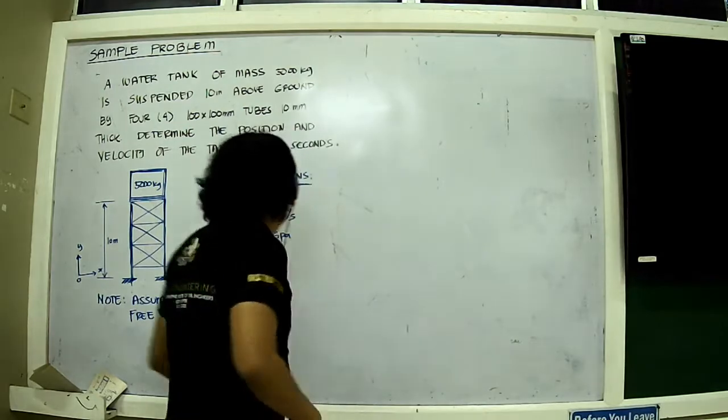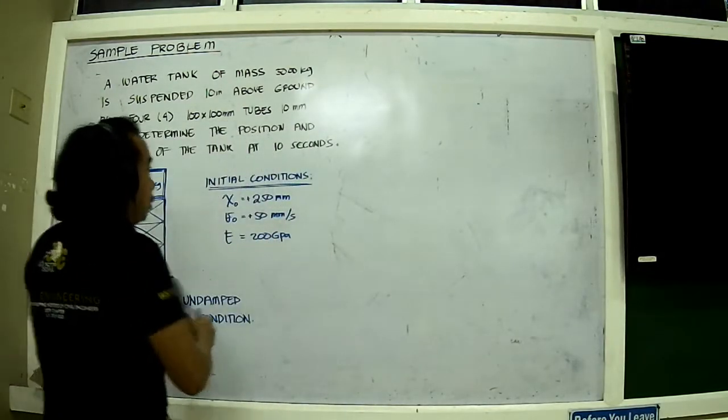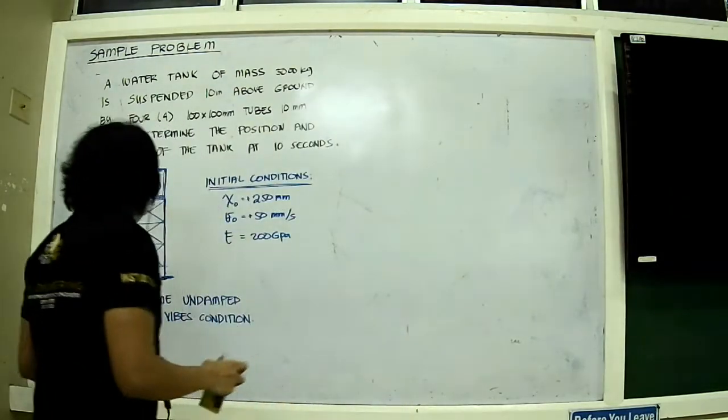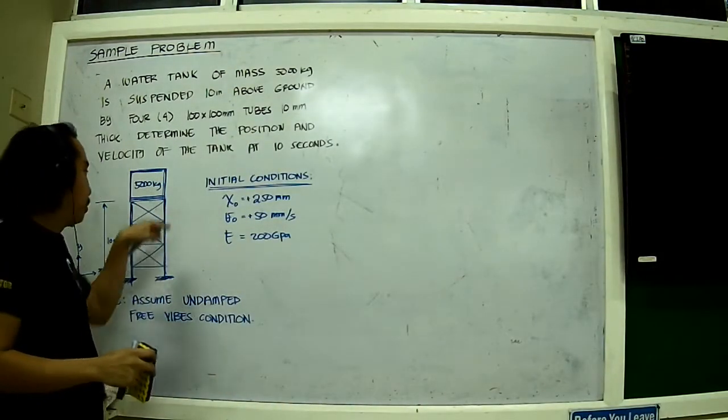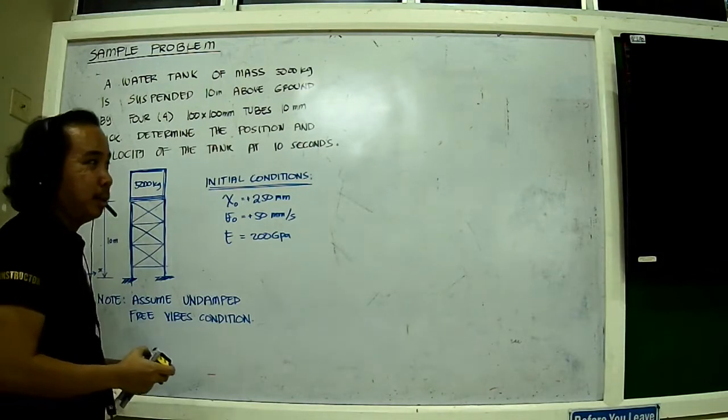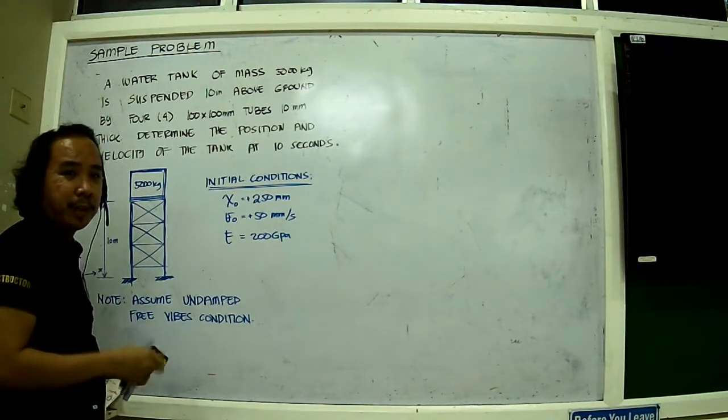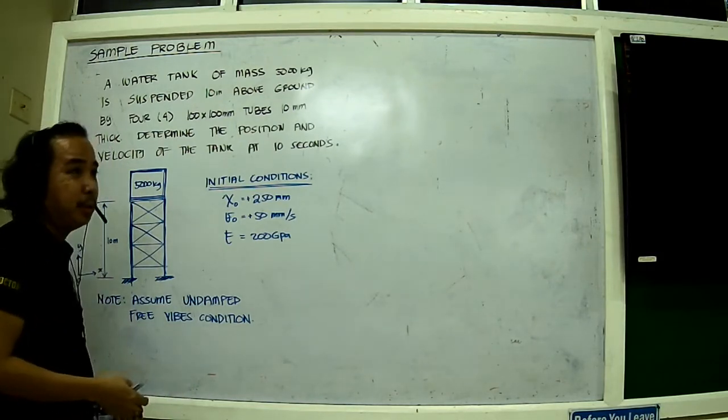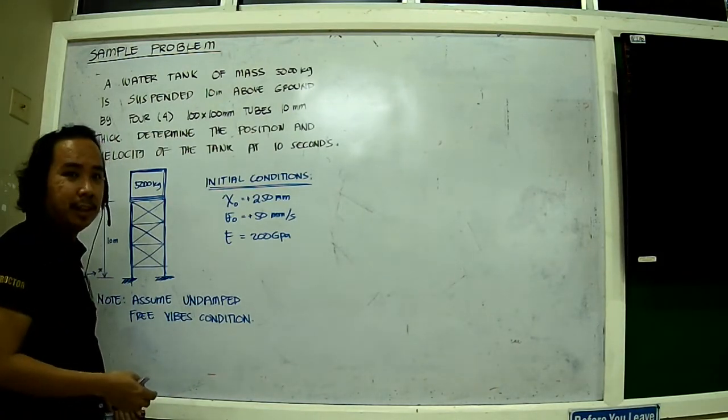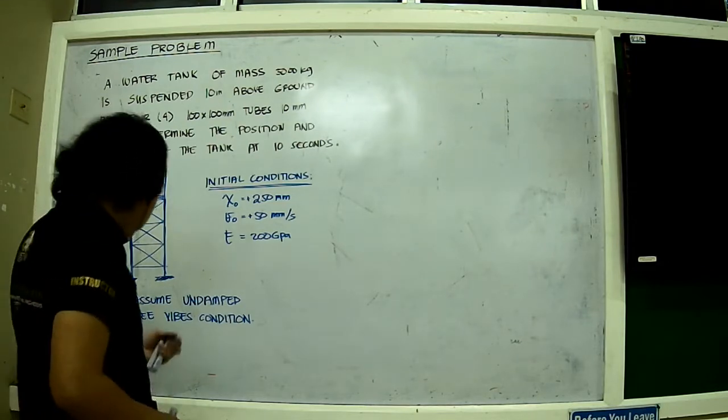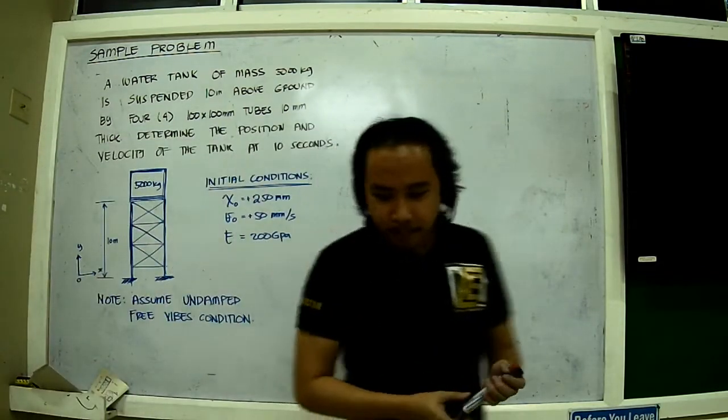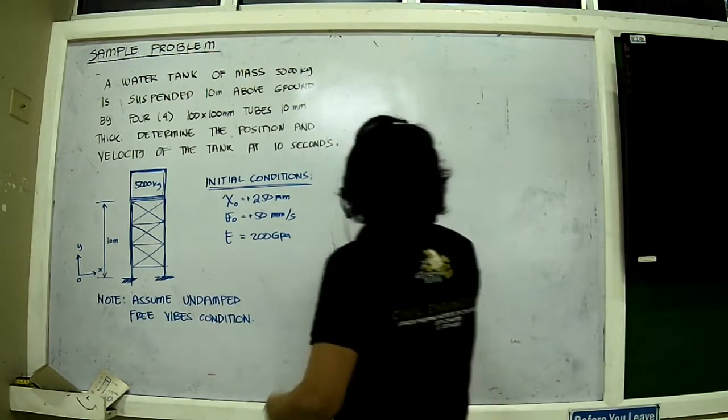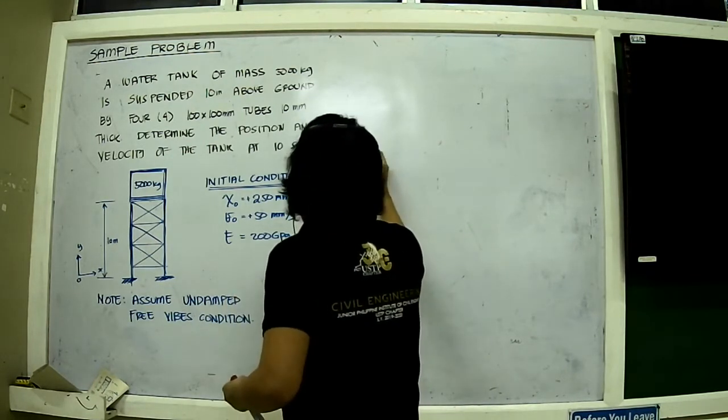Now, although it's not stated in the problem, I'm assuming that the support at the bottom and at the top is rigid. So we can use the equation about stiffness for columns that we derived last time. First, let's go for stiffness.